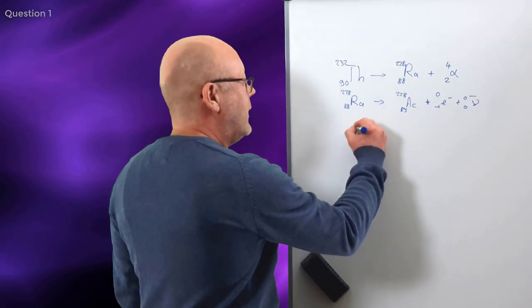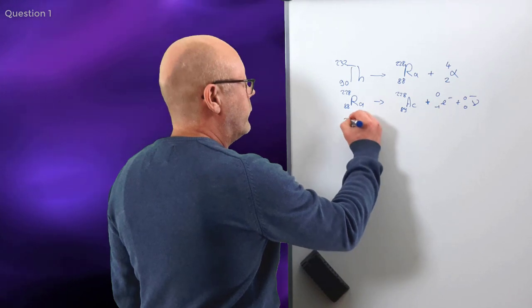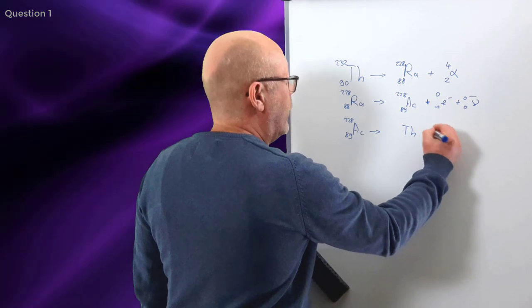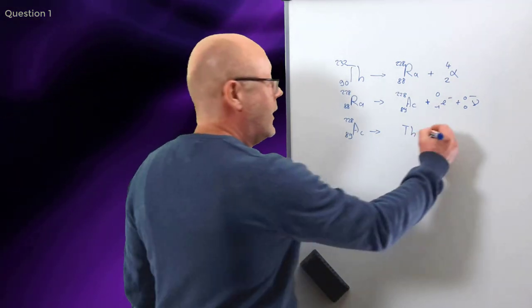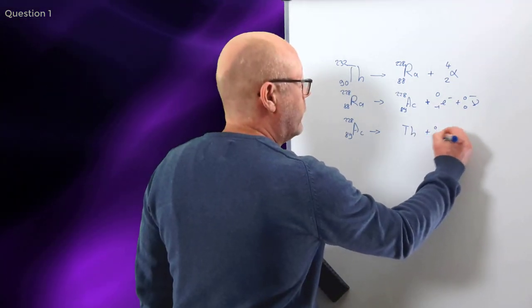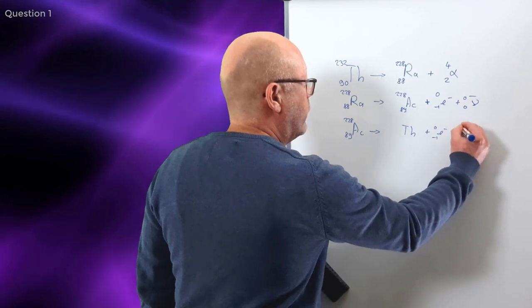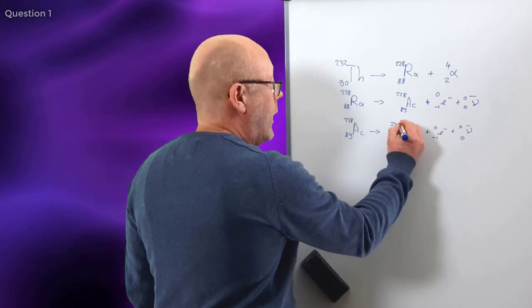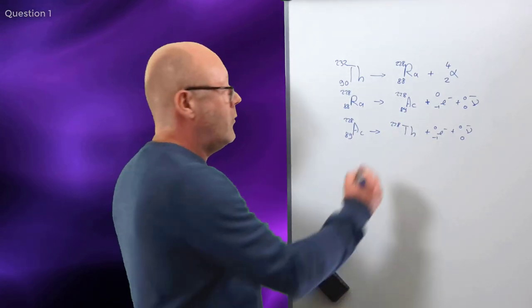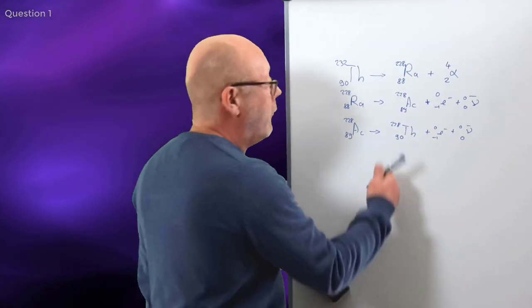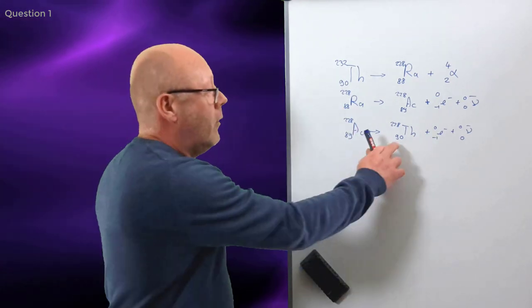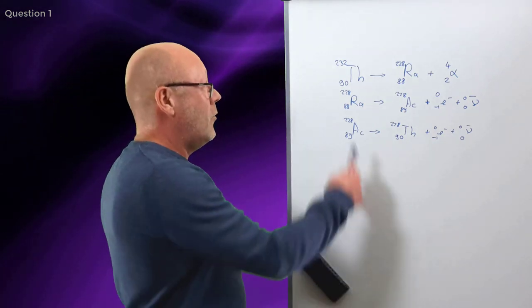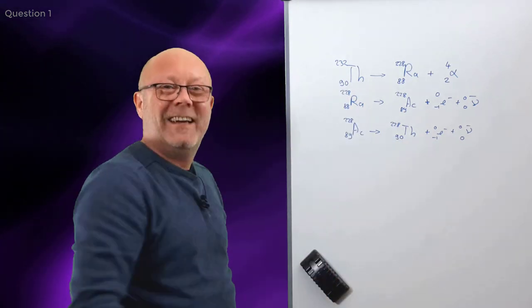Now, for the third reaction, the actinium will transform into thorium by beta minus decay. So, it's the same story. Well, the number of nucleons remains unchanged. And a neutron transformed into a proton, so you get 90. Yeah, of course, you get 90 because this number determines the element. So, we'd better get 90 back if it's thorium.